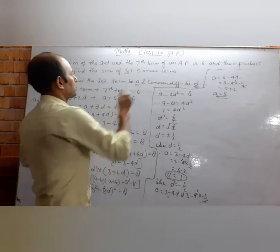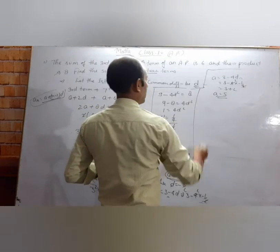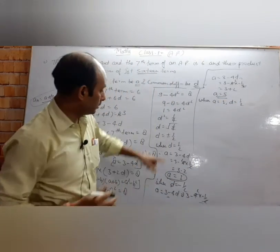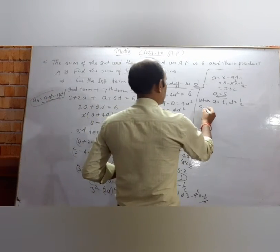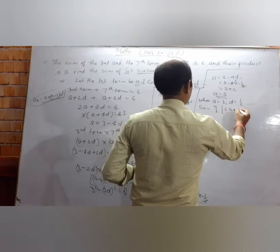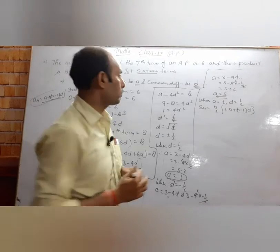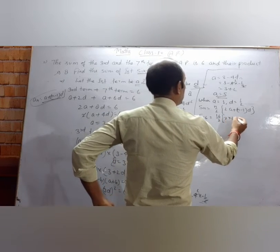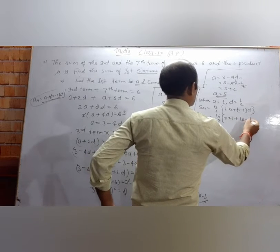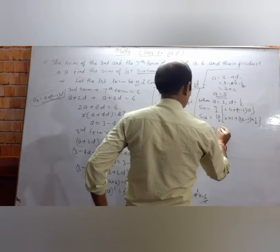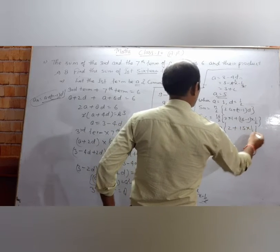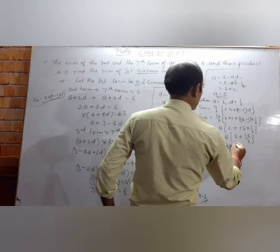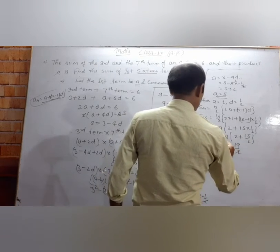Now find the sum of the first 16 terms. When a equals 1 and d equals 1/2, S_n equals n by 2 into 2a plus n minus 1 into d. So S_16 equals 16 upon 2 into 2 times 1 plus 15 into 1/2, which is 8 into 2 plus 15 by 2, giving 8 into 19 by 2, which equals 76.